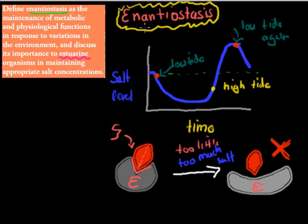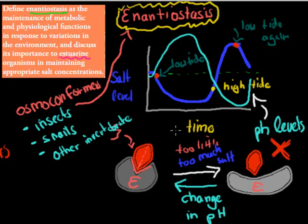How does an animal that does enantiostasis, that does not do homeostasis, how does it make sure this doesn't happen? There's actually a pretty clever way of doing it. You can look at this blue line here. This is supposed to be the pH levels. As salt goes down, salt levels go down, the response in enantiostasis is actually to increase our pH levels.